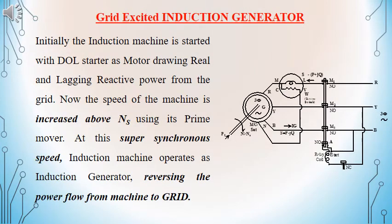Initially, the induction machine will be operating as an induction motor. It will be drawing power from the infinite bus. We can go for a DOL starter, that is direct online starter, and the machine is running at a speed below synchronous speed as a motor. The speed of the prime mover can be increased and brought above the synchronous speed, that is at super synchronous speed. At that condition, the induction machine will be operating as induction generator and the direction of power flow will be from the induction generator to the grid.